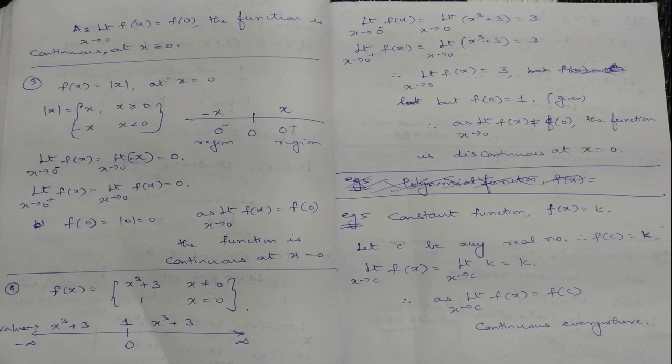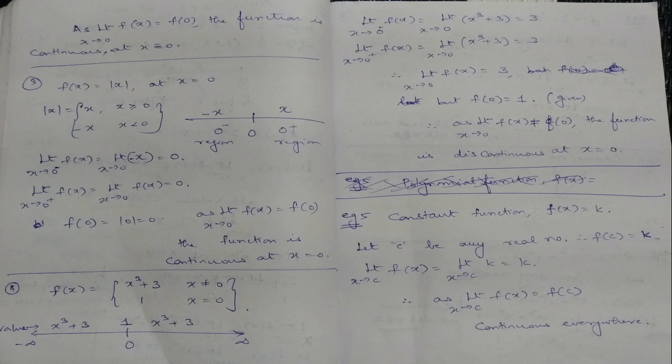Example 3: f(x) = |x| at x = 0. Is it continuous? The modulus function graph is a V-shaped graph. Those who do not remember it, please take your 11th standard book, go to the chapter 'Relations and Functions', and go through the graphs of the modulus function, step function, and signum function — all these graphs you should be thorough with.